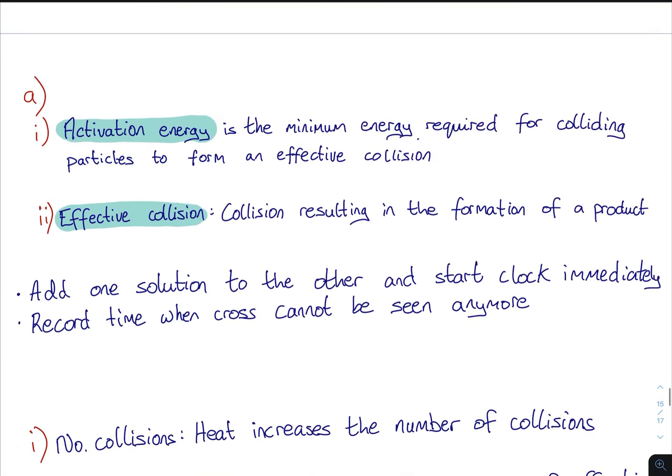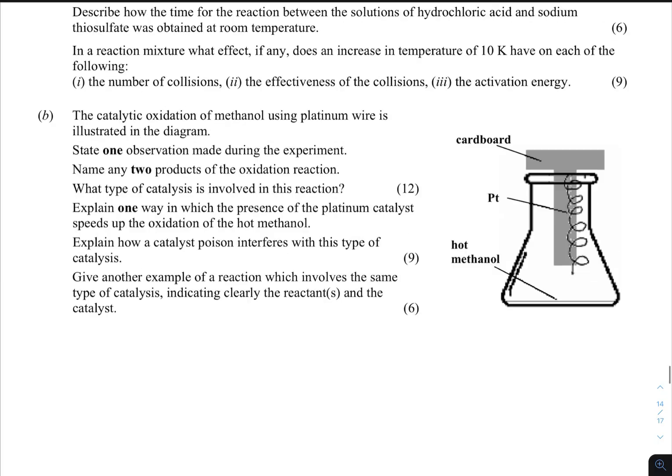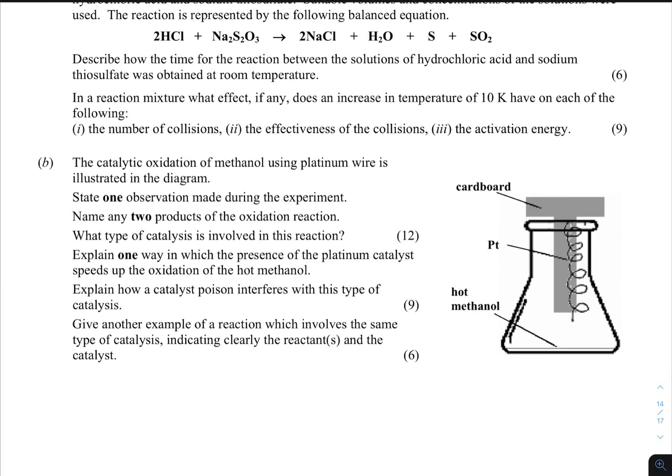In the reaction mixture, what effect, if any, does an increase in temperature of 10 Kelvin have on each of the following: number of collisions, effectiveness of collisions, and activation energy? For number of collisions, heat will increase the number of collisions because you're giving the particles more energy so they're going faster, and therefore they're more likely to hit off one another. For effective collisions, heat will also increase the number of effective collisions because you're giving them more energy. For activation energy: no effect. Only a catalyst has any effect on the activation energy.